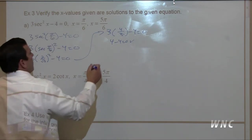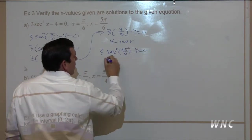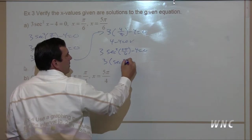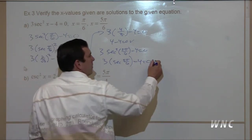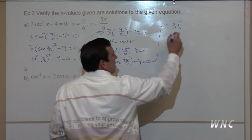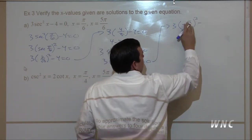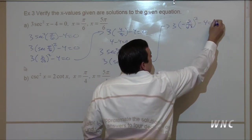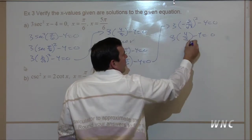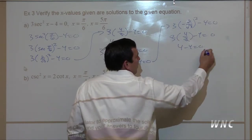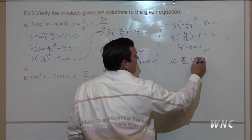For x equals five pi over six: three times secant squared of five pi over six minus four. Secant is negative in the second quadrant, so secant of five pi over six is negative two over square root of three. When squared, the negative goes away, giving four-thirds. So three times four-thirds minus four equals four minus four equals zero. It works. Therefore x equals pi over six and five pi over six are solutions.